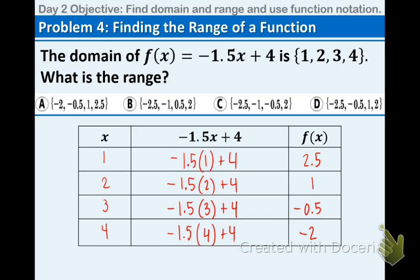So our domain is the x values. And our range is the y values, also known as the f(x) values. So all we need to do now is just write them in bracket form. We're going to go smallest to biggest: -2, -0.5, 1, and 2.5. And we can take a look to see which one matches up. And it is A.